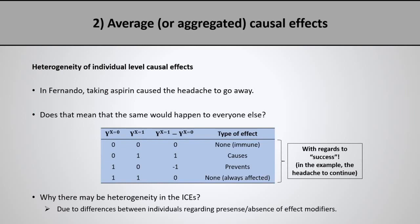The first thing I want to talk about is the idea that individual level causal effects can vary — the causal effect does not need to be the same across all individuals in our population. In the example from the last video, taking aspirin caused Fernando's headache to go away. But we can wonder: is it the case that taking aspirin will cause the headache to go away in all individuals? Not necessarily. When we have a binary exposure and a binary outcome we can define four types of effects, summarized in this table.